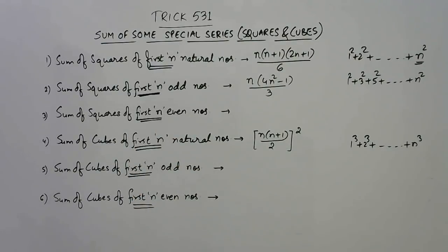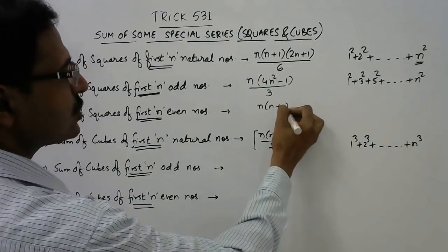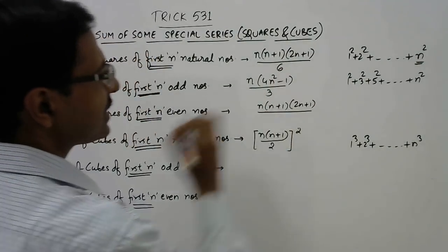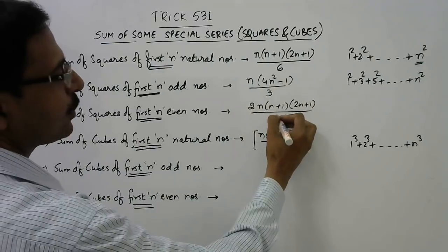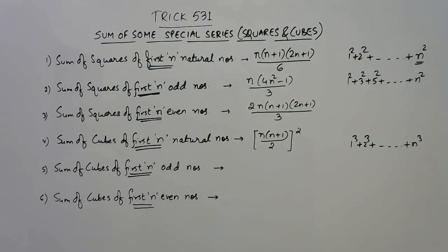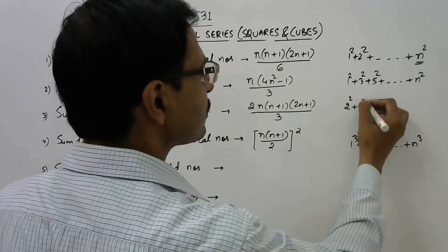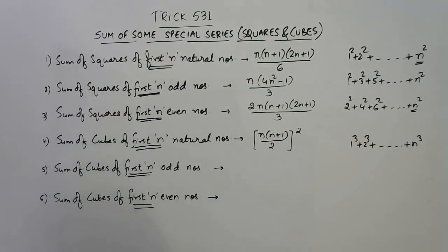Likewise, the shortcut for finding the sum of squares of first n even natural numbers — that is 2² + 4² + 6² up to n² — uses the same terms n, n+1, and 2n+1, but in the denominator, instead of 6, we multiply the numerator by 2 and divide the denominator by 2, giving 2n(n+1)(2n+1)/3. Just put the value of n to get the sum of squares of first n even natural numbers.